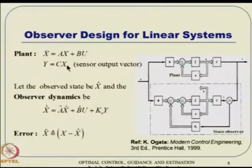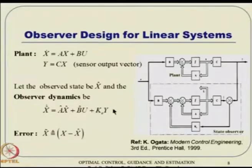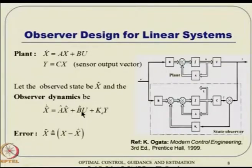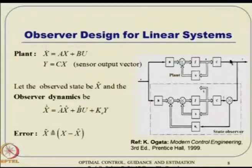We have a linear system plant: x-dot equals Ax plus Bu, and y equals Cx. The observer dynamics is x-hat-dot equals A-hat x-hat plus B-hat u plus K_e times y, because y contains the output information. The error x-tilde is defined as x minus x-hat. This top portion is the original system dynamics — x-dot is Ax plus Bu, and y is Cx. The bottom dotted box is the observer dynamics. On one hand you have y-hat, and there is y; using this error information y-tilde, the observer dynamics estimates the state x-hat.